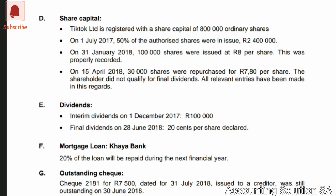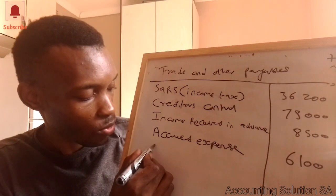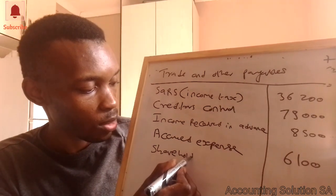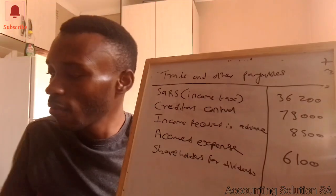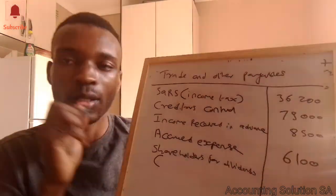Before I forget, we also have information from items E, F, and G. They said interim dividends paid on 1 December 2017 — that is not part of this note. However, we have final dividends of 20 cents per share declared at the end of the year. This means we have shareholders for dividends, and shareholders for dividends fall under this payables note.